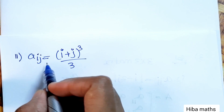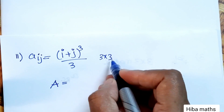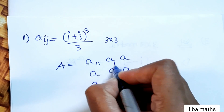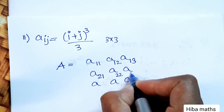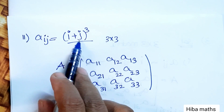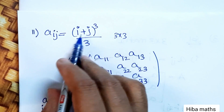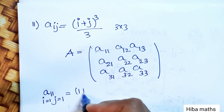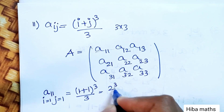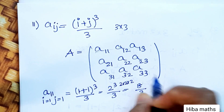Second subdivision: A[i,j] equals (i plus j) whole cube divided by 3. It is a 3x3 matrix with 3 rows and 3 columns. For A[1,1]: i value 1, j value 1 — (1 plus 1) cubed divided by 3 equals 2 cubed by 3 equals 8 by 3. For A[1,2]: i is 1, j is 2 — (1 plus 2) cubed divided by 3 equals 3 cubed divided by 3 equals 27 divided by 3, the 3s cancel, answer is 9.